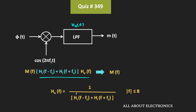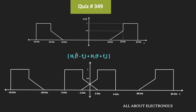First, let us find out H(f - fc) + H(f + fc). In H(f - fc), the entire spectrum will get shifted by 20 kHz, meaning this spectrum will shift to 2 kHz. Similarly, in H(f + fc), this entire spectrum will get shifted by 20 kHz, meaning this spectrum will come in between 2 kHz to 6 kHz, while this other spectrum will move towards 46 kHz.